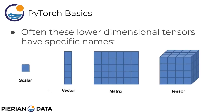Lower-dimensional tensors have specific names that are often used instead of saying '1D tensor' or '2D tensor.' We can think of a single number as a scalar value. If we organize a 1D array of these scalar values, we have a vector. If we have a 2D array of these scalar values, we have a matrix. And then a 3D array or higher can be known as a tensor. A vector is a one-dimensional tensor, a matrix is a two-dimensional tensor, and here we have a three-dimensional tensor.